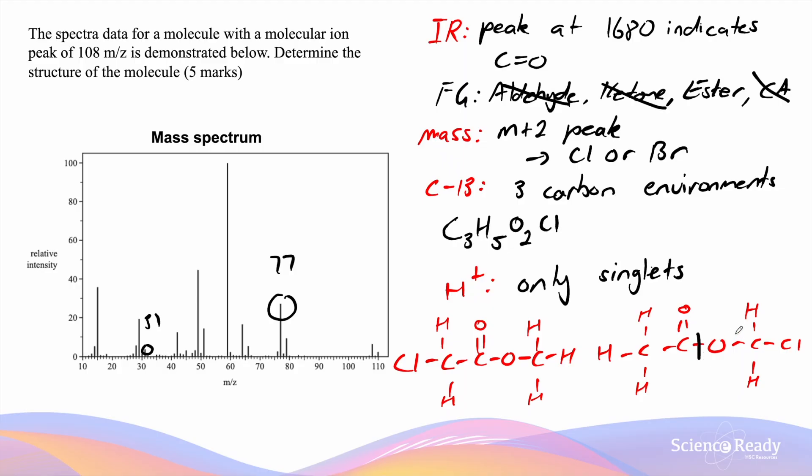If cleavage occurred here for this particular isomer, we would get one fragment which is C2H3O which has a molar mass of 43. 43 produces a very very weak signal on the mass spectrum which is almost non-existent.